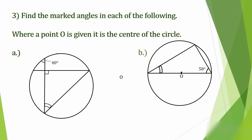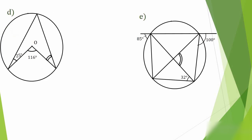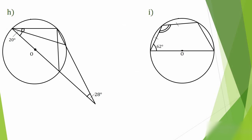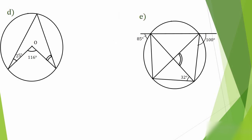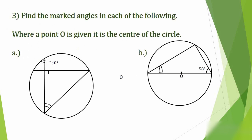Question 3 says: find the marked angles in each of the following. Where a point O is given, it is the center of the circle. We have sub-questions A through I, and we'll treat them one after the other.